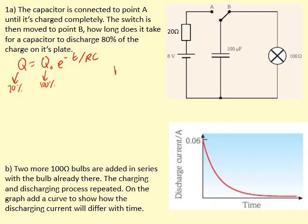We want this to be 20% and this to be 100%. So let's quickly work out RC. So it's 100 microfarads times 100 ohms, which gives us 0.01 seconds.